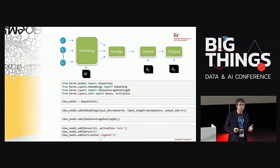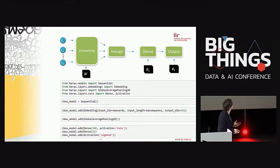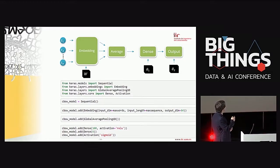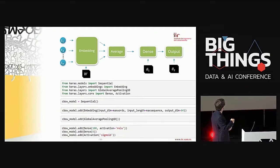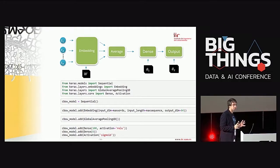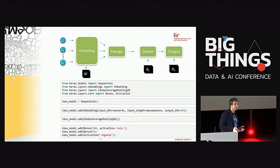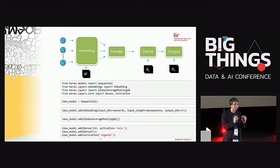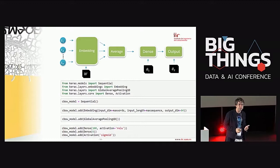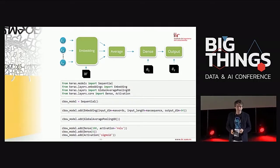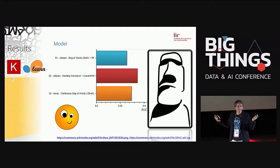This is easy to implement in Keras. You define a sequential model, add the embedding layer, the average pooling layer, then the dense and output layers. There's almost a one-to-one mapping between the architecture and the code. But when we train this model and test it on the test data... it doesn't work. So what's going on?